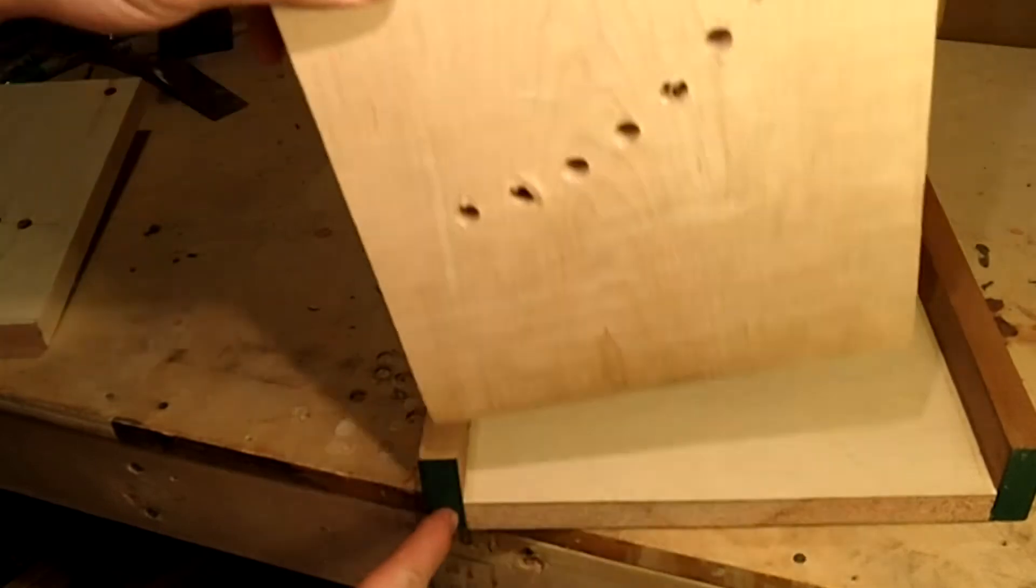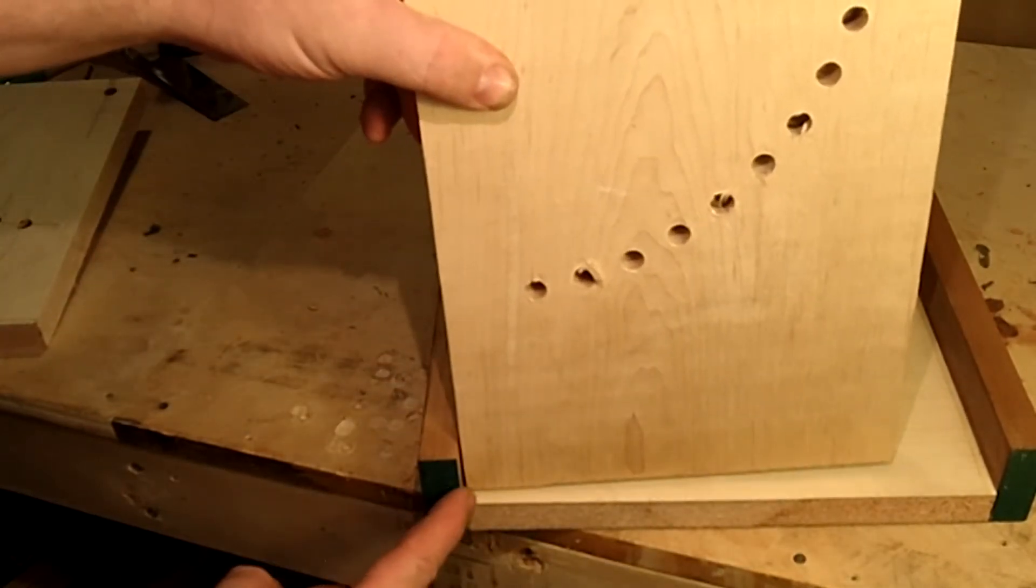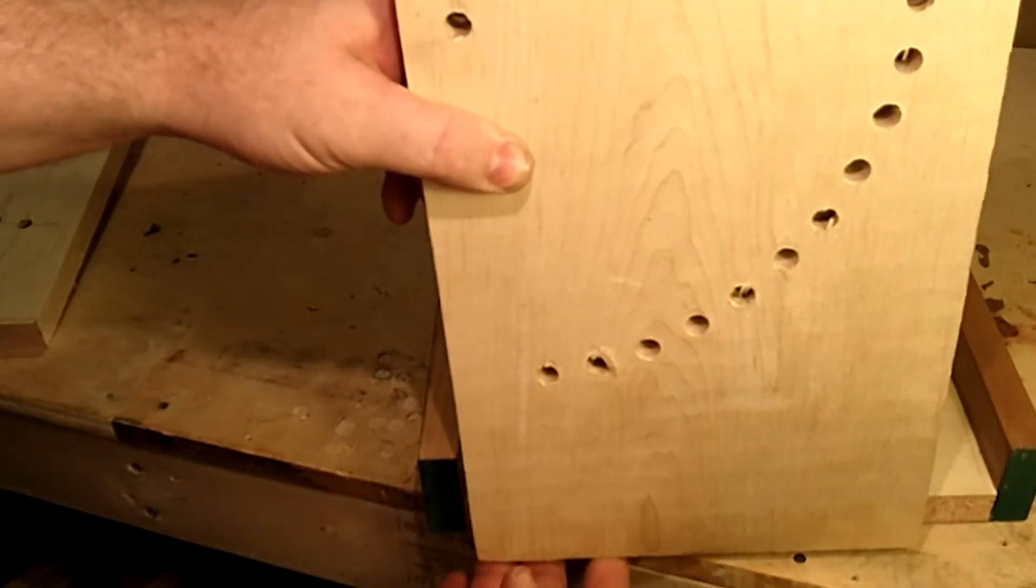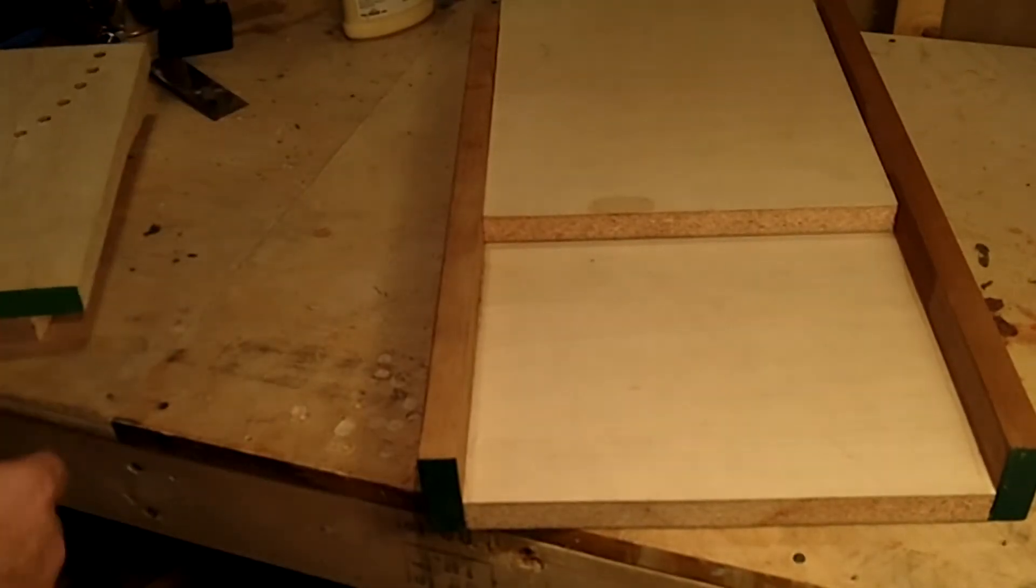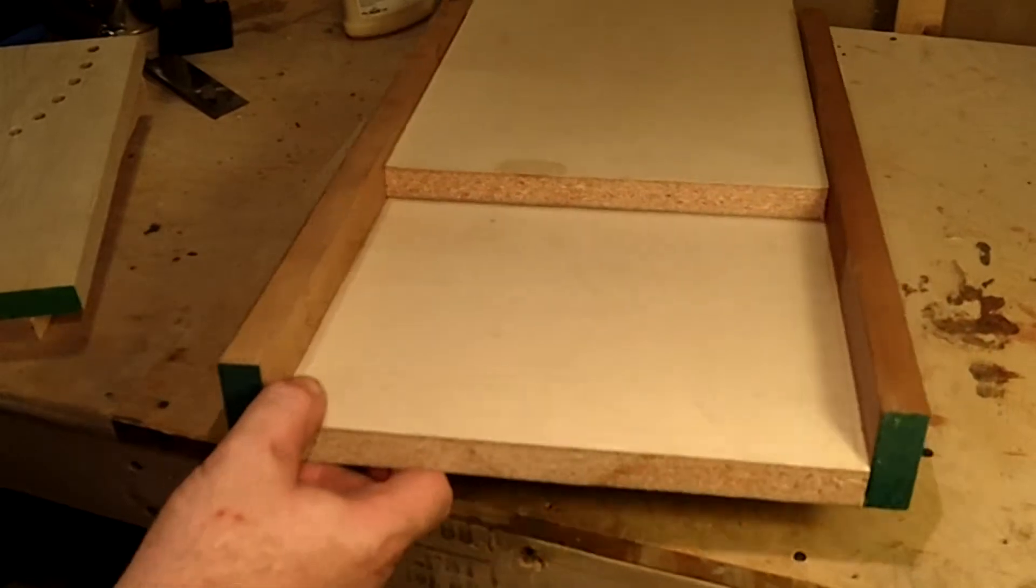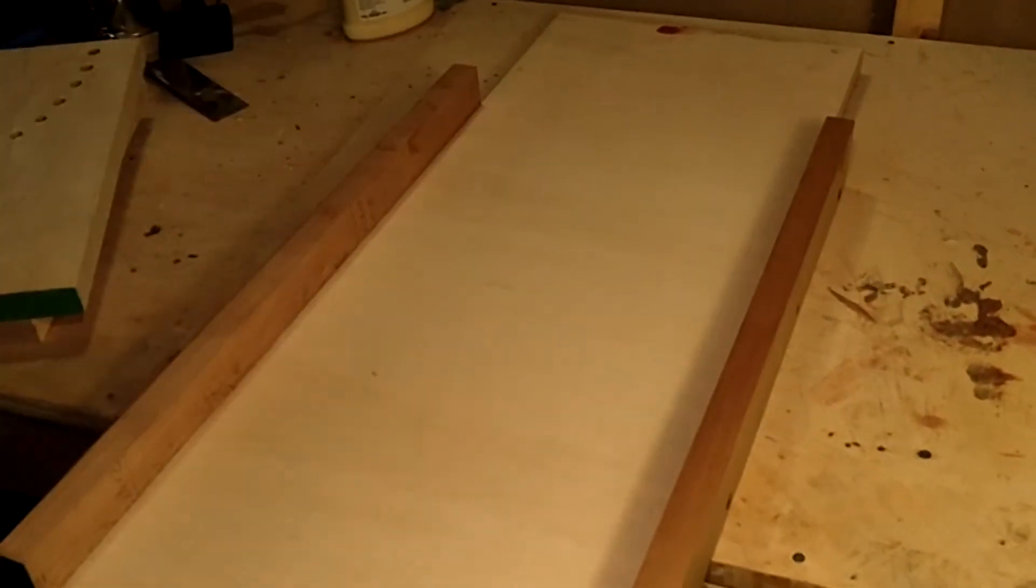But now also notice that one of your side pieces is a little shorter than the other. One's going to go on the bottom. The other will go on the top piece here. So you have to compensate so that the holes will align correctly.